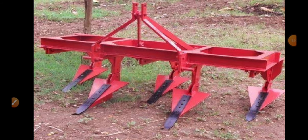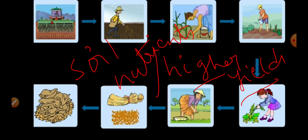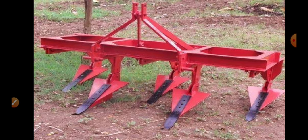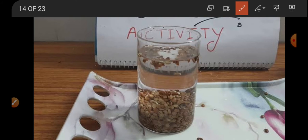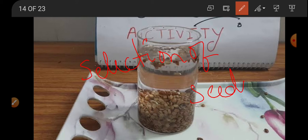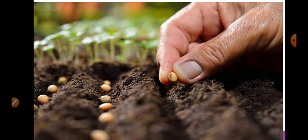After ploughing, the next important step is sowing of seeds. But before sowing, the most important method is selection of seeds, because the entire agricultural yield depends on it. In the market we get different varieties of seeds, and we need to identify which ones are good quality. So selection of seeds is one important process, after which we proceed with sowing.